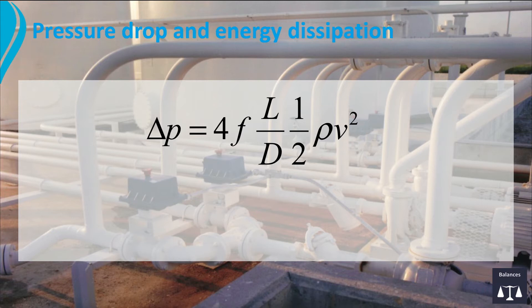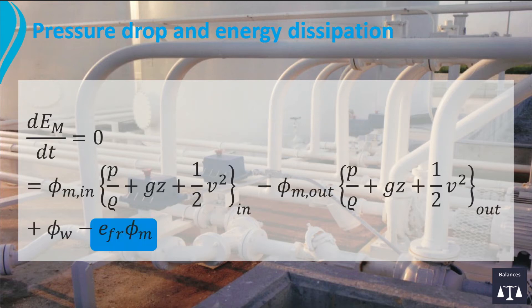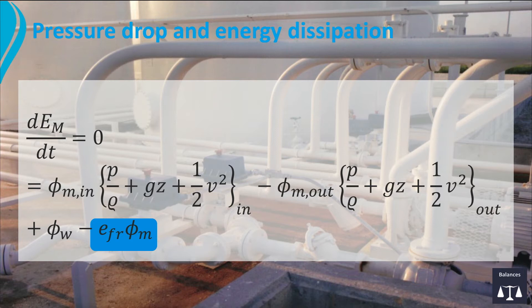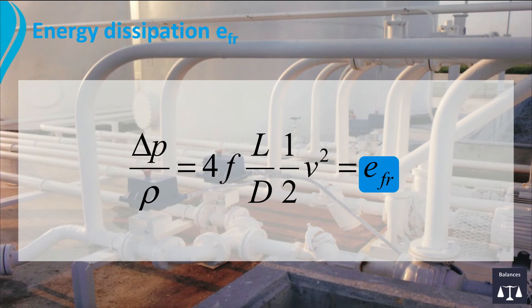Now we can combine this equation with the mechanical energy balance. The last term of this equation represents the amount of mechanical energy which is converted into thermal energy. If we consider the flow through a horizontal straight pipe with a constant mass flow rate and assume that work on the system can be neglected, the combination of this equation and the Fanning equation results in E_fr, which represents the amount of energy per kilogram of the fluid dissipated in the straight tube by friction with the wall. If you look at the units you will see immediately that we have joules per kilogram.